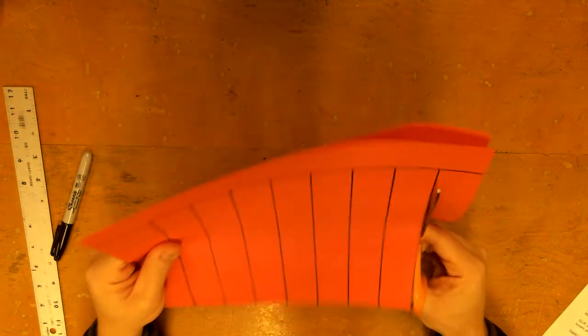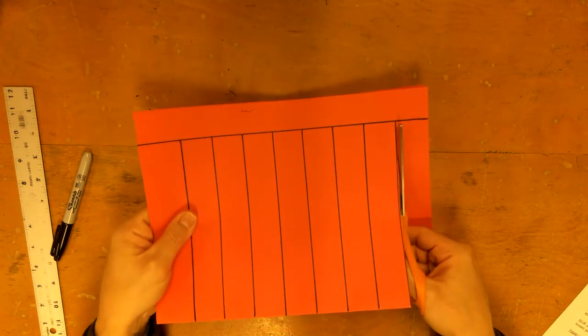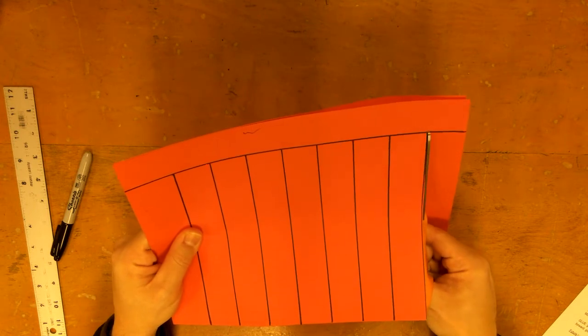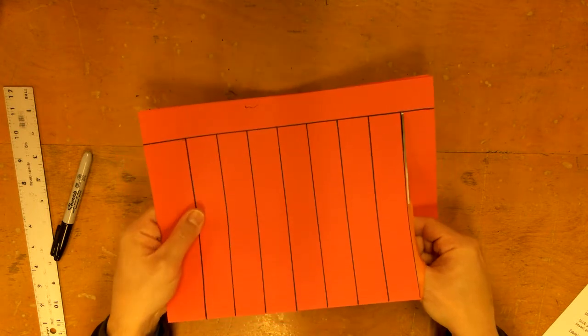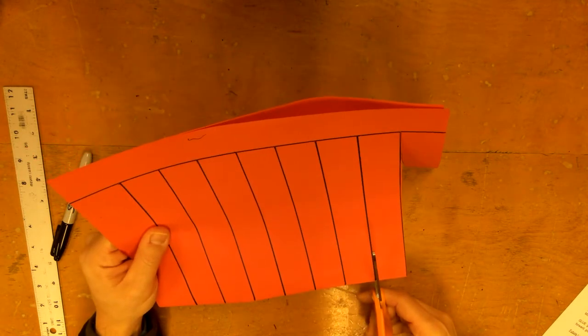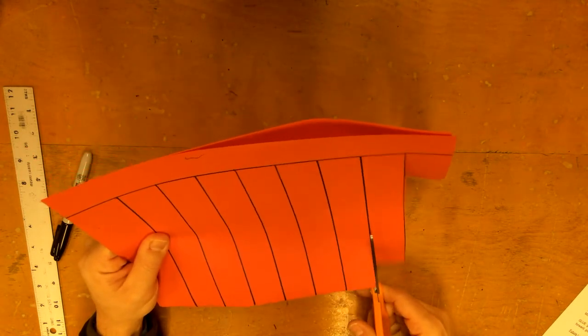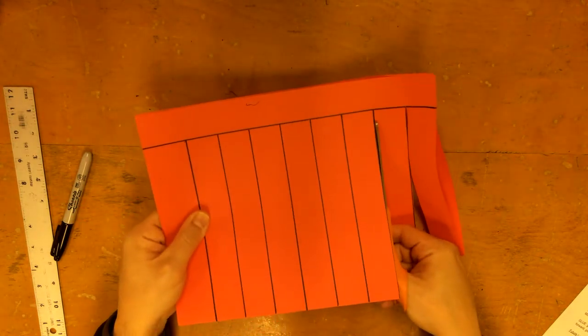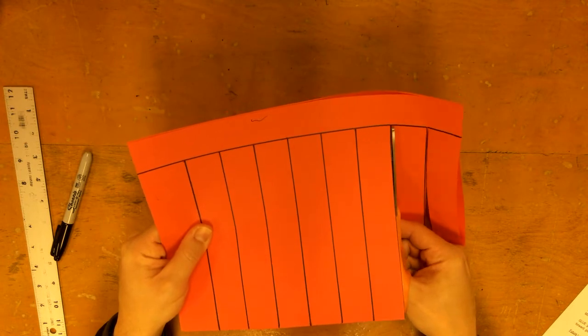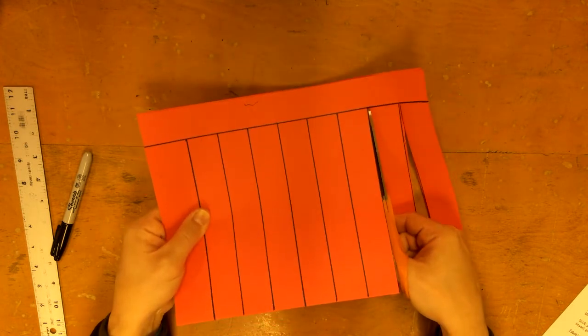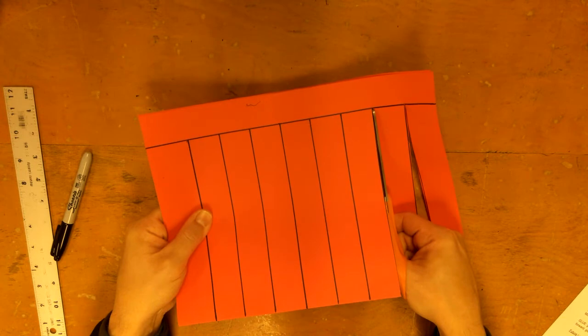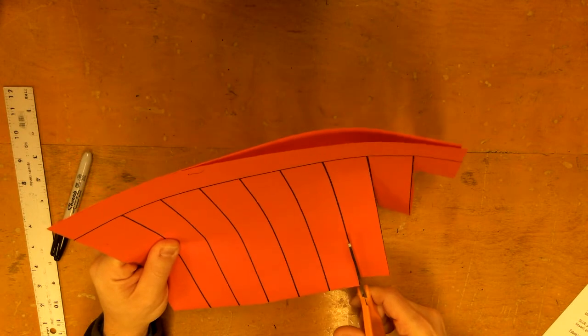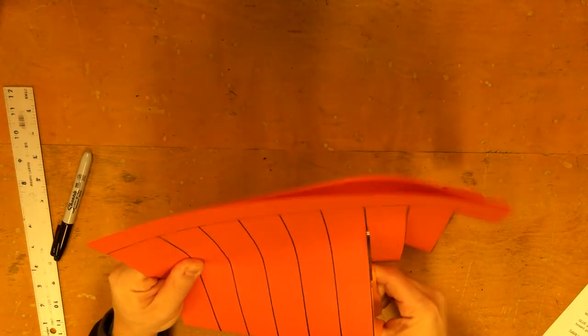When I get to that line that goes horizontal, I like to match it up with the tip of my scissors, and that way all I got to do is close. Think of that line as that stop sign. You don't want to go past it, but you also don't want to stop right here. You got to get all the way up to that line. So that's where I like to match up my scissors tip, and that way I just have to close all the way and I'm right on that line.